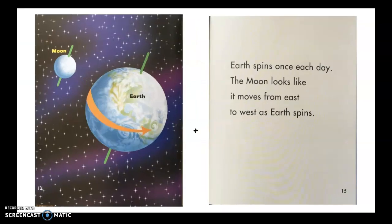Earth spins once each day. The moon looks like it moves from east to west as earth spins.